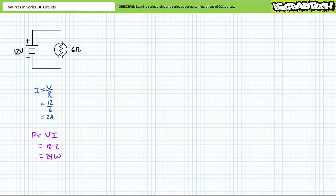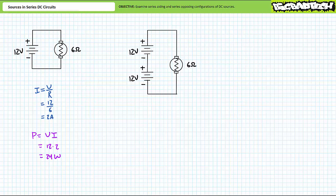Let's say that doesn't cut it and you need more power. A simple solution is to stack another 12 volt battery on top of the first such that their polarities mutually reinforce each other. Given the direction of conventional current travel induced by each source is in the same direction, this is known as a series aiding relationship.